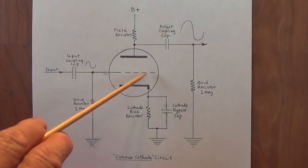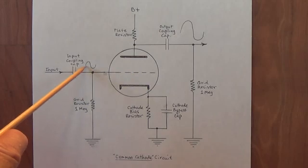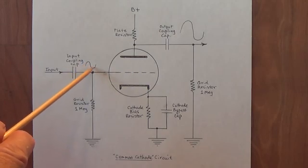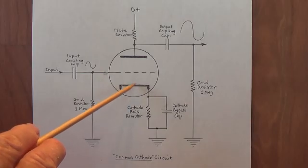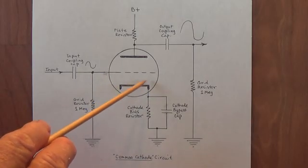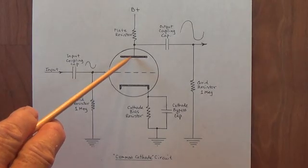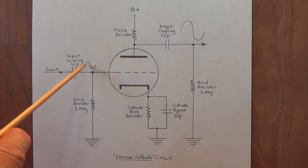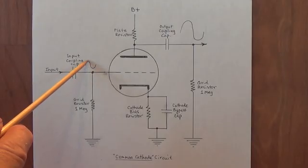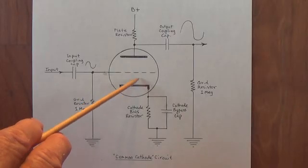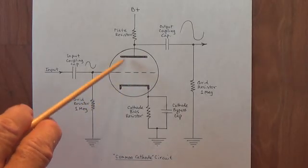Next, into this negatively biased grid we put in our input signal. It's fairly weak. Now the electrons here have amassed on the cathode and really want to go to the plate. The negative grid suppresses them somewhat. Now when the signal comes in, when the signal has a positive upswing like it does here, it tends to neutralize some of that negative bias and allows the electrons to really start flowing.